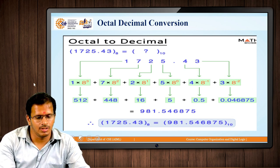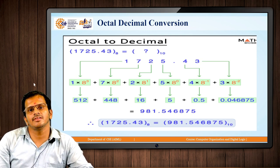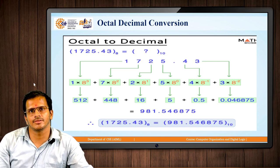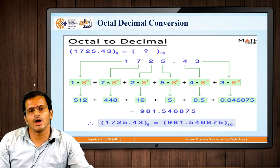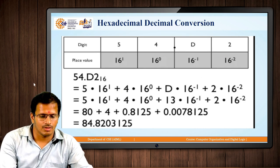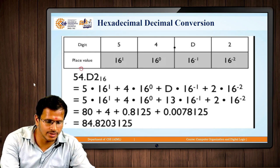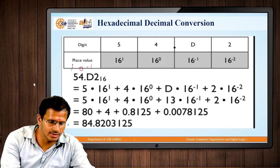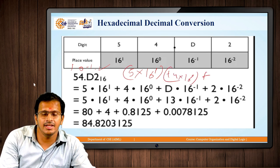This is how an octal number is converted into the decimal number system. Next is the conversion of hexadecimal to decimal. The process uses radix 16. Whatever numbers are represented, we assign positions starting from 0, 1 for integer digits, and −1, −2 for fractional digits. For example, the integer part gives 5 × 16¹ + 4 × 16⁰, and then for the letter D in the fractional part — what value is D?